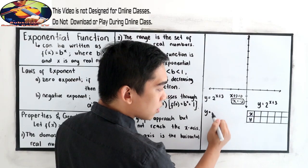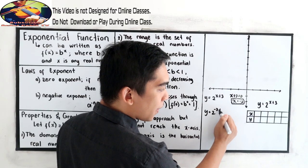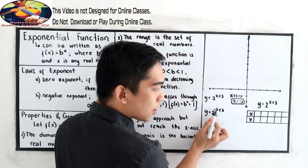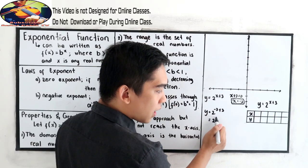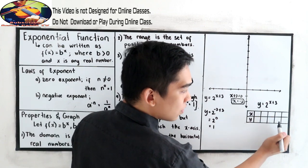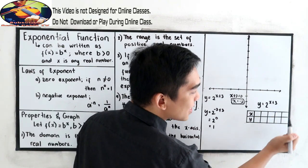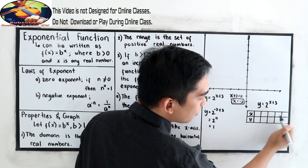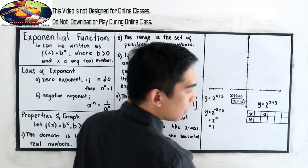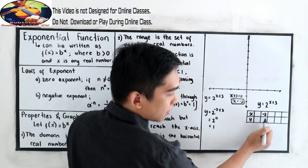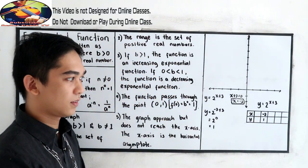When x = negative 3: y = 2 raised to (negative 3 + 3) = 2 raised to 0 = 1. So when x = negative 3, y = 1. We will now extend the table one more value in each direction from negative 3.